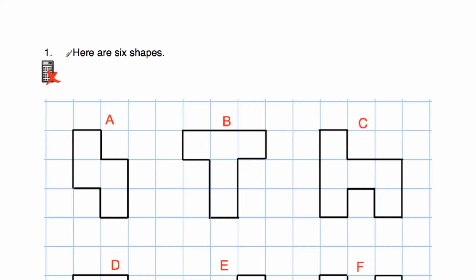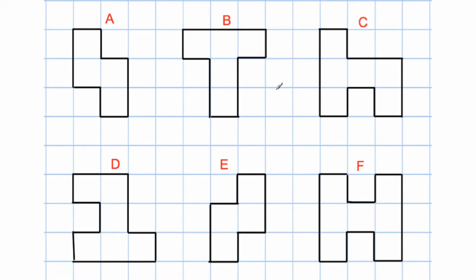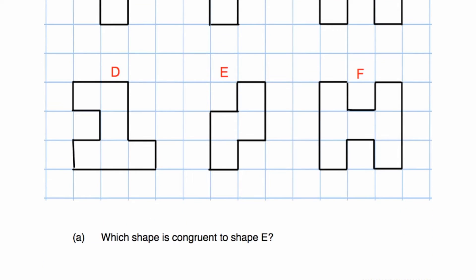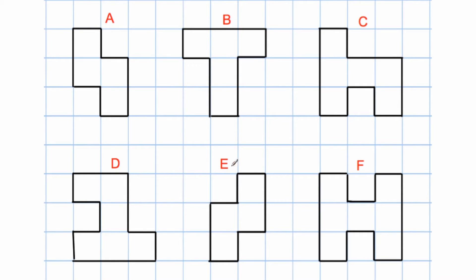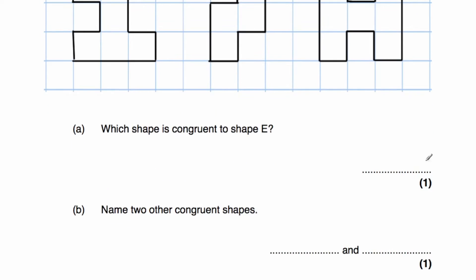Let's have a look at question number one. Here are six shapes on a grid — A, B, C, D, E, F. The question says: which shape is congruent to shape E? Congruent means the same shape and size. It's not going to be F, D, C, or B. But shape A is congruent to shape E because it's got the same shape and size. Obviously they're not in the same orientation — shape A looks like it's been reflected to get shape E — but they are the same shape and size, so they are congruent.